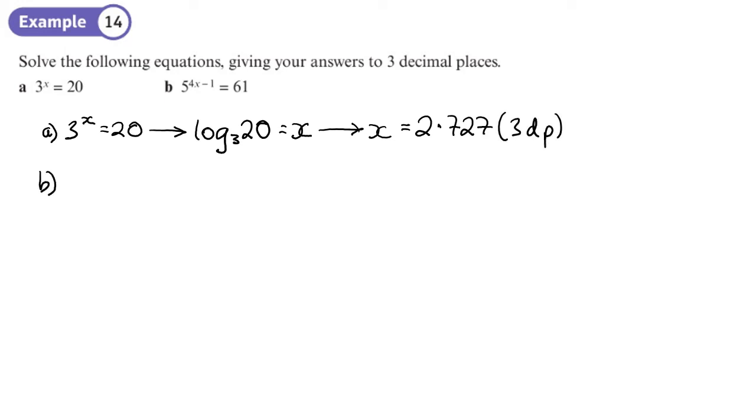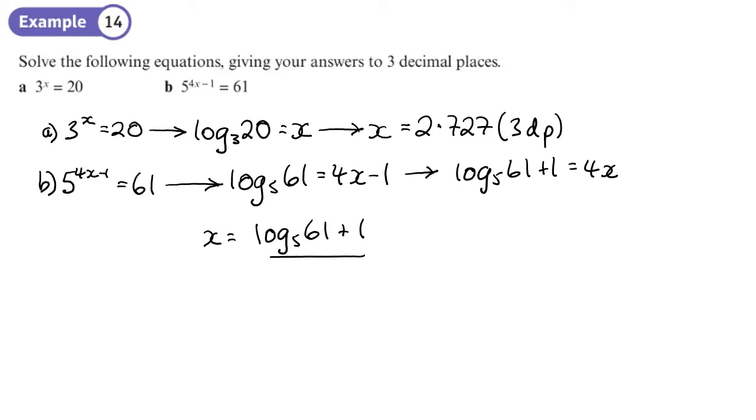Part b. So 5 to the power 4x minus 1 equals 61. So again let's write as a log to the base 5 of 61 will give us 4x minus 1 which means log to the base 5 of 61 plus 1 will give us 4x which means x equals log to the base 5 of 61 plus 1 divided by 4.